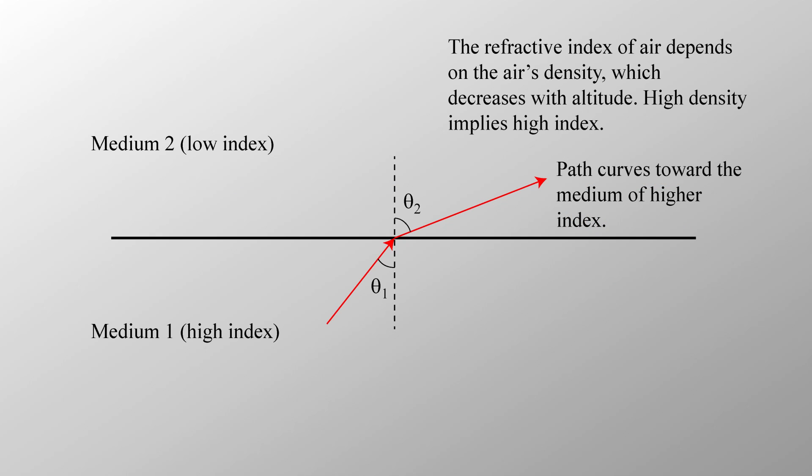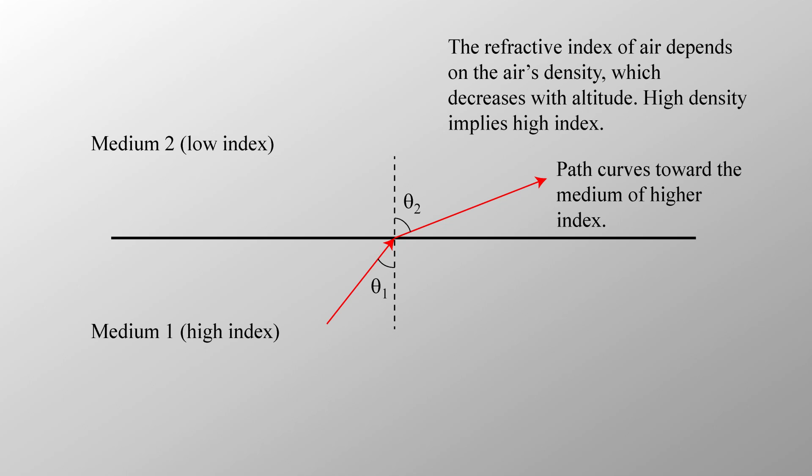As light goes from one medium to another medium with a different refractive index, it bends toward the medium with higher index. This means that a beam of light will tend to follow the curvature of the Earth, so that objects beyond the horizon become visible. The effect can be pronounced by certain temperature conditions, because cold air is denser than hot air. Suppose, for example, that you put a telescope just 20 centimeters above the surface of cold water. Oops.